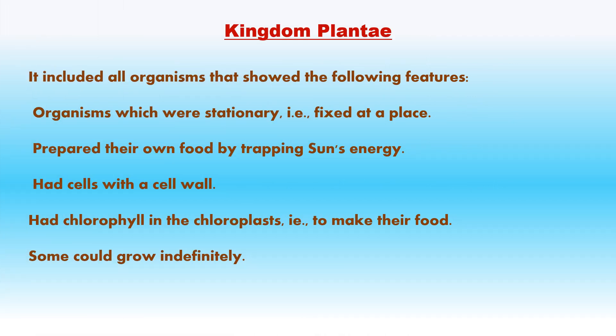Kingdom Plantae included all organisms that showed the following features: organisms which were stationary, that means fixed at a place; prepared their own food by trapping the sun's energy; had cells with a cell wall; had chlorophyll in the chloroplasts to make their food; and some could grow indefinitely.